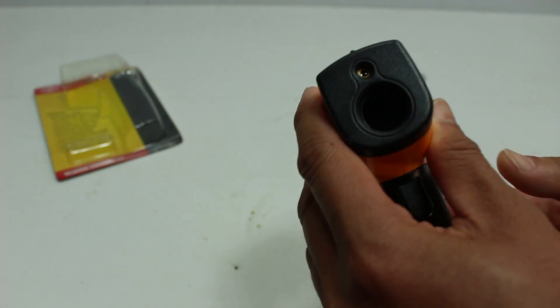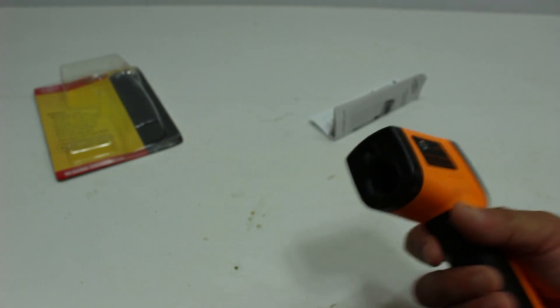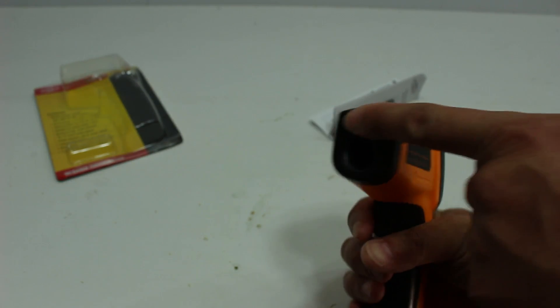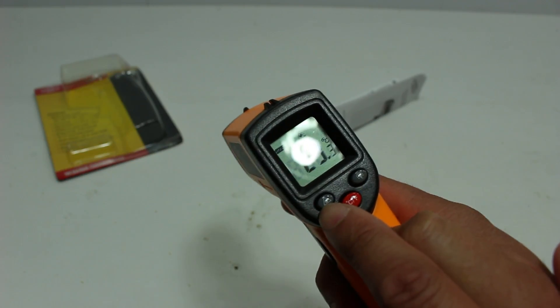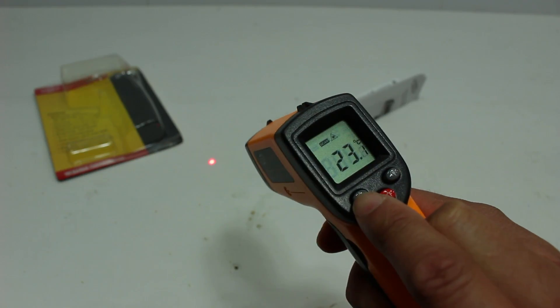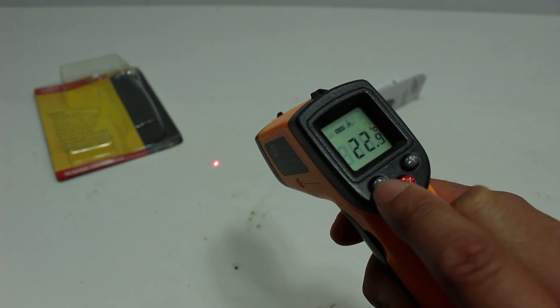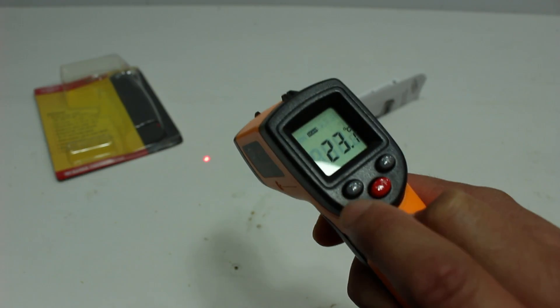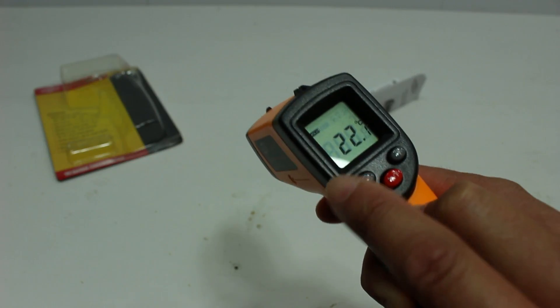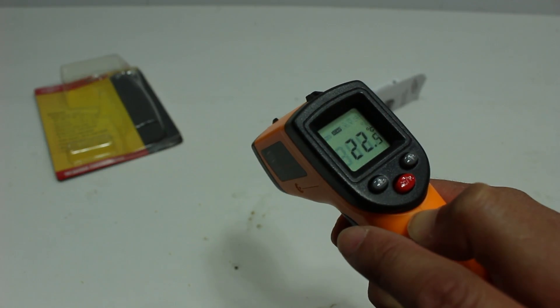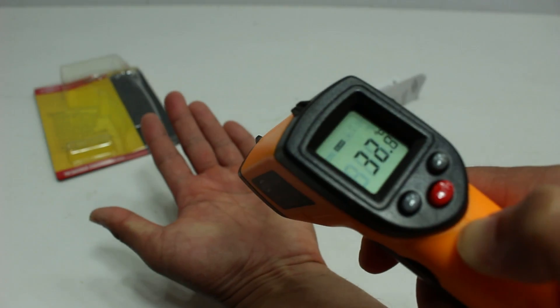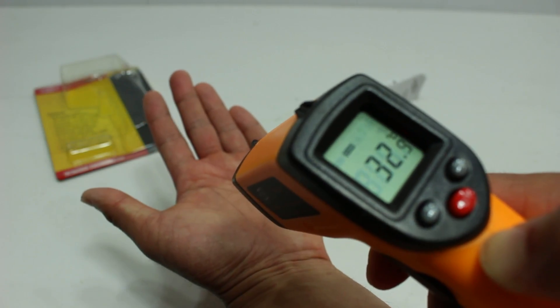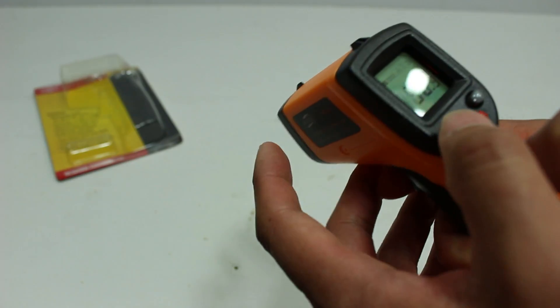I always thought the laser was doing something, but it isn't. It's actually this here, because you can turn the laser on and off with the button back here. You can see the laser's on now, but when I push that button, now the laser's off. I'm still taking a reading.